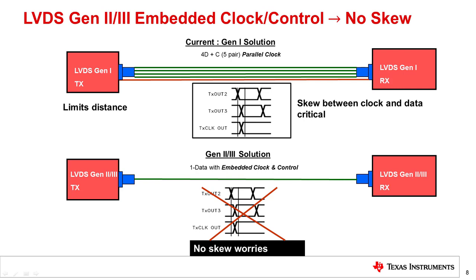However, the fact that the clock is serialized along with the data in Gen 2 and Gen 3 means that you no longer need to worry about pair-to-pair receiver skew. Additionally, this allows you to transmit over longer distances than with traditional Gen 1 devices, since the longer the cable is, the worse the skew becomes.